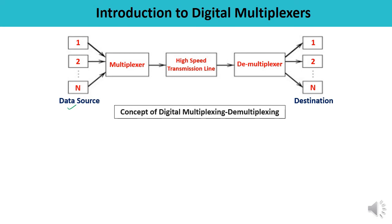The multiplexed signal consists of source digits from sources 1, 2, 3, 4, 5, 6, interleaved bit by bit or word by word. This bit-by-bit interleaving procedure can be done using a selector switch, which sequentially selects a bit from each of the inputs 1, 2, 3, 4, up to n, and places them onto a high-speed transmission line.